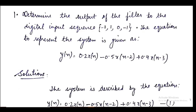In the first question, we have to determine the output of the filter. We are given a digital input sequence with four coefficients: minus 1, 1, 0, and minus 1. We are also given the system equation: y(n) = 0.2x(n) − 0.5x(n−2) + 0.4x(n−3). This equation describes the filter, and we have to determine the output corresponding to this input.